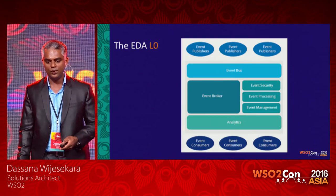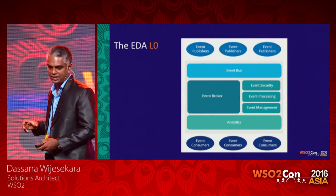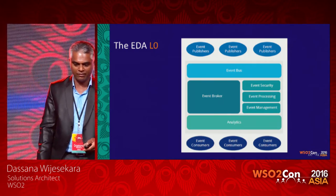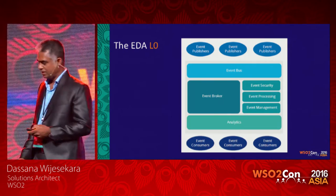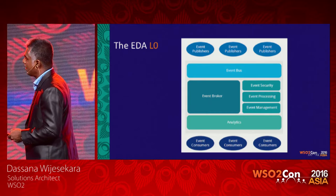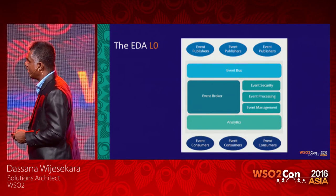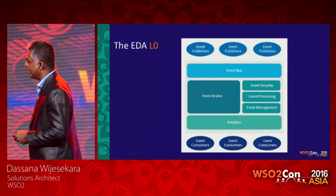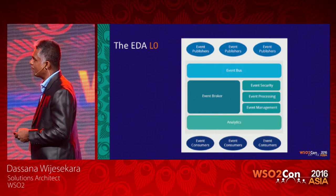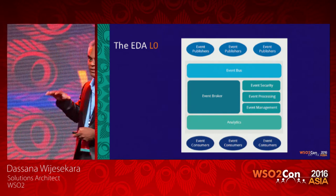At the L0 level architecture for EDA, you need an event bus, event broker, event security, event processing, event management, and analytics. These are the main components of event-driven architecture at level 0.